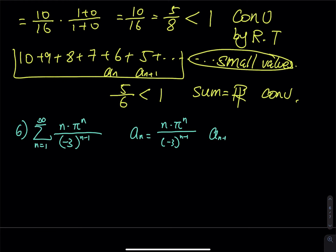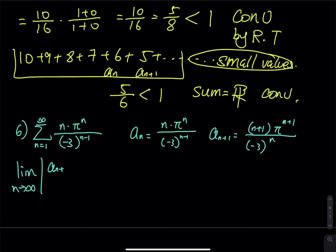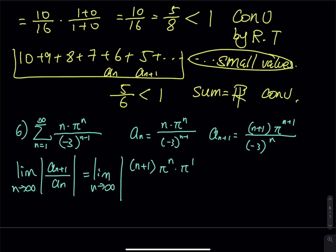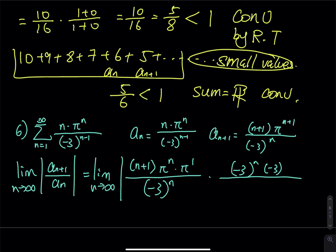The next term a_{n+1} is n+1 times pi raised to n+1, divided by negative 3 to the n+1 minus 1, leaving just an n in the exponent. Set up the ratio: limit as n approaches infinity of a_{n+1} divided by a_n. Breaking down the power: pi to the n times pi to the first, divided by negative 3 to the n. Then multiply by the reciprocal of a_n: negative 3 to the negative 1 times n. Cancel pi to the n.